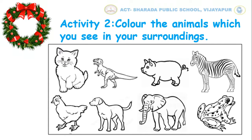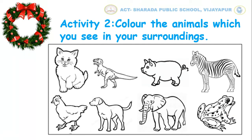So children, among these animals, which are the animals that you see in your surroundings? Yes kids, we can see a cat, a pig, a hen, a dog, and a frog.